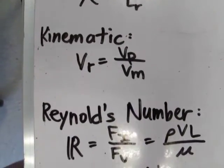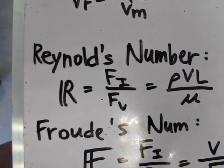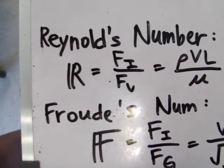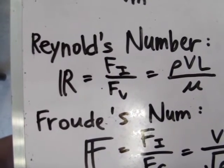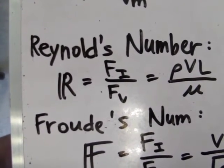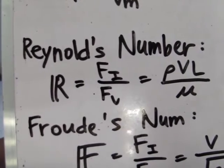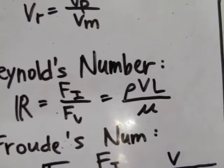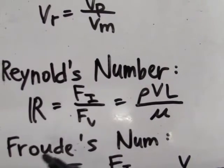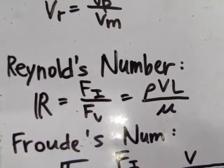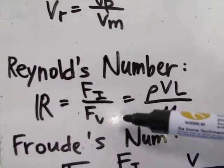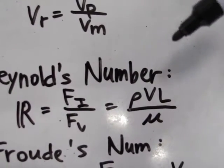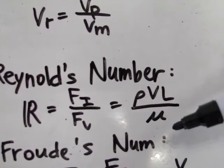Next up are the five important dimensionless numbers. First up is Reynolds number, which is the most common dimensionless parameter used in fluid mechanics. If the problem states that the viscous forces are predominant, you should use this number. Reynolds number is the ratio of the inertial force over the viscous forces, which is equal to rho times V times L over the absolute viscosity.